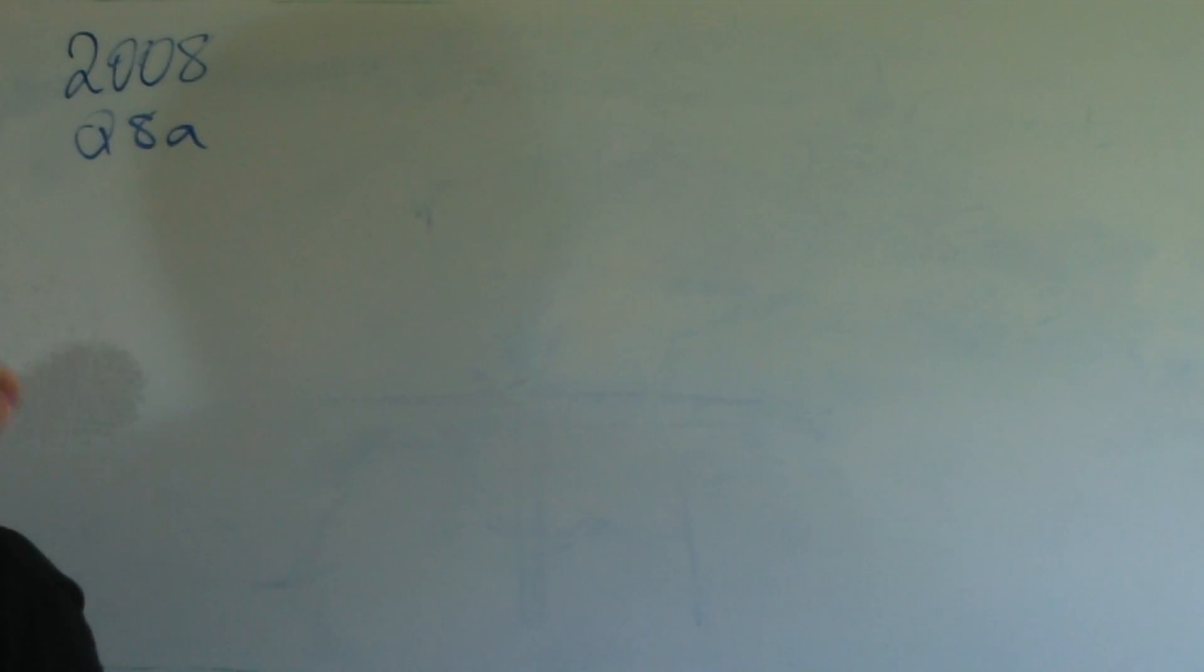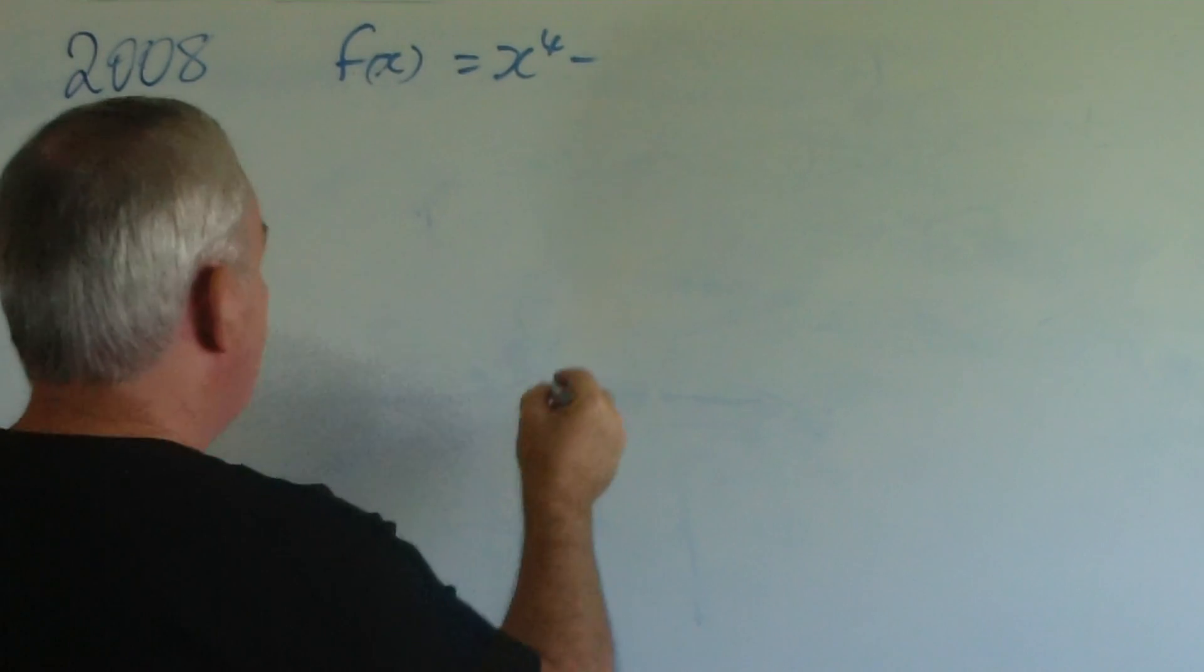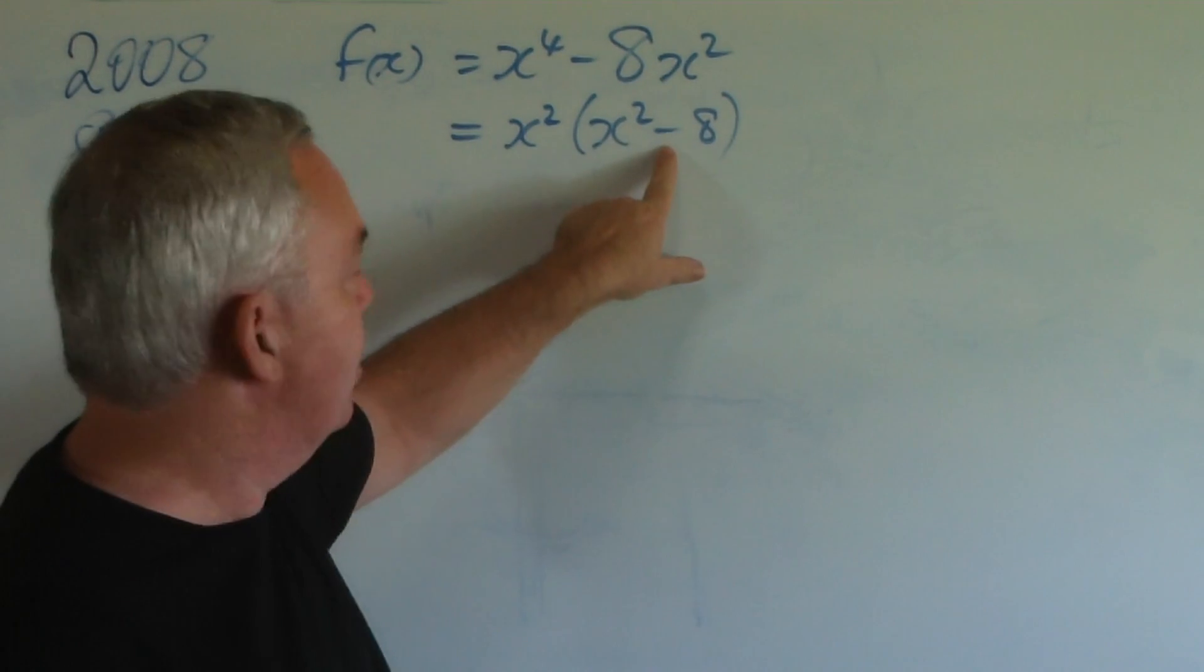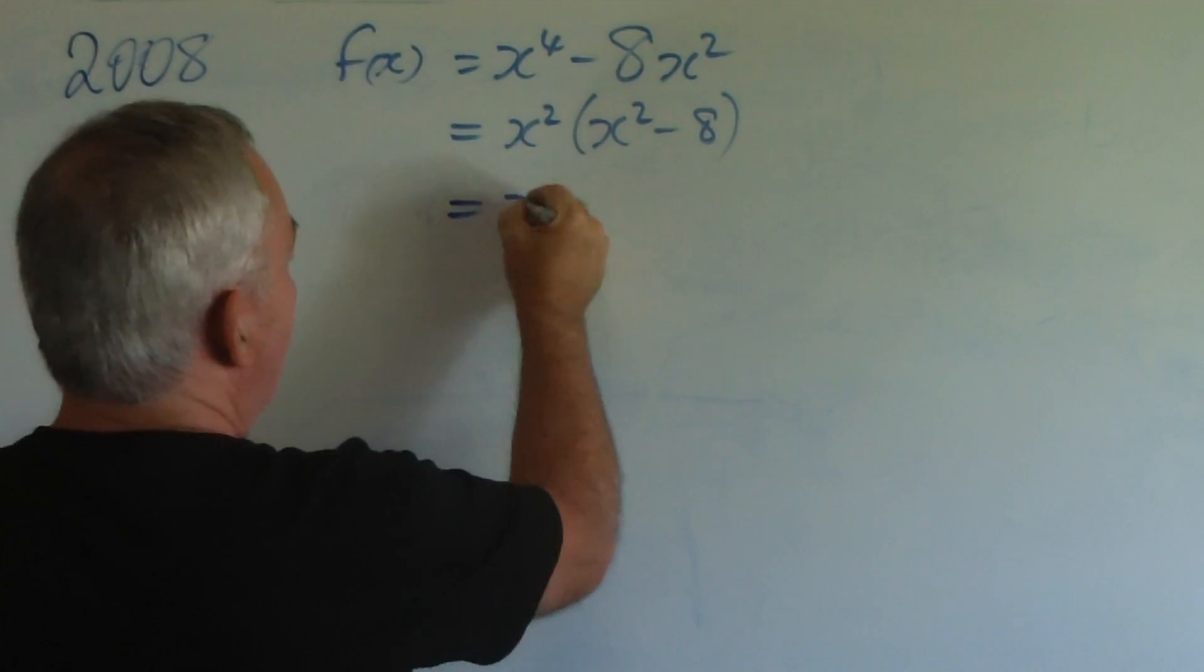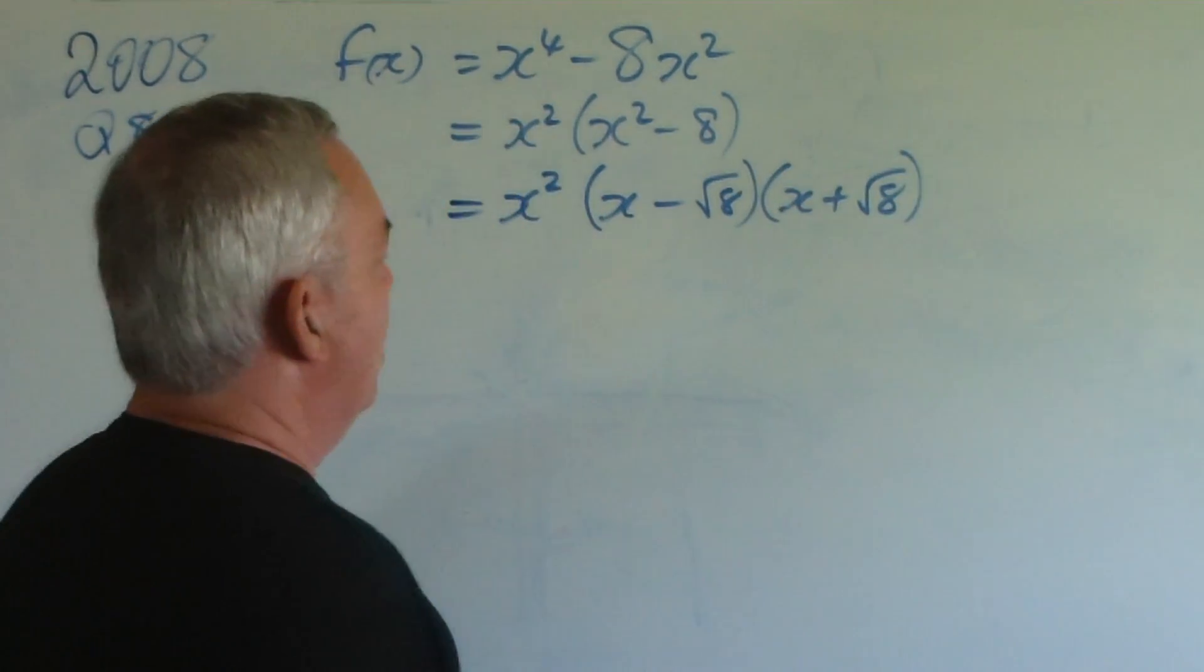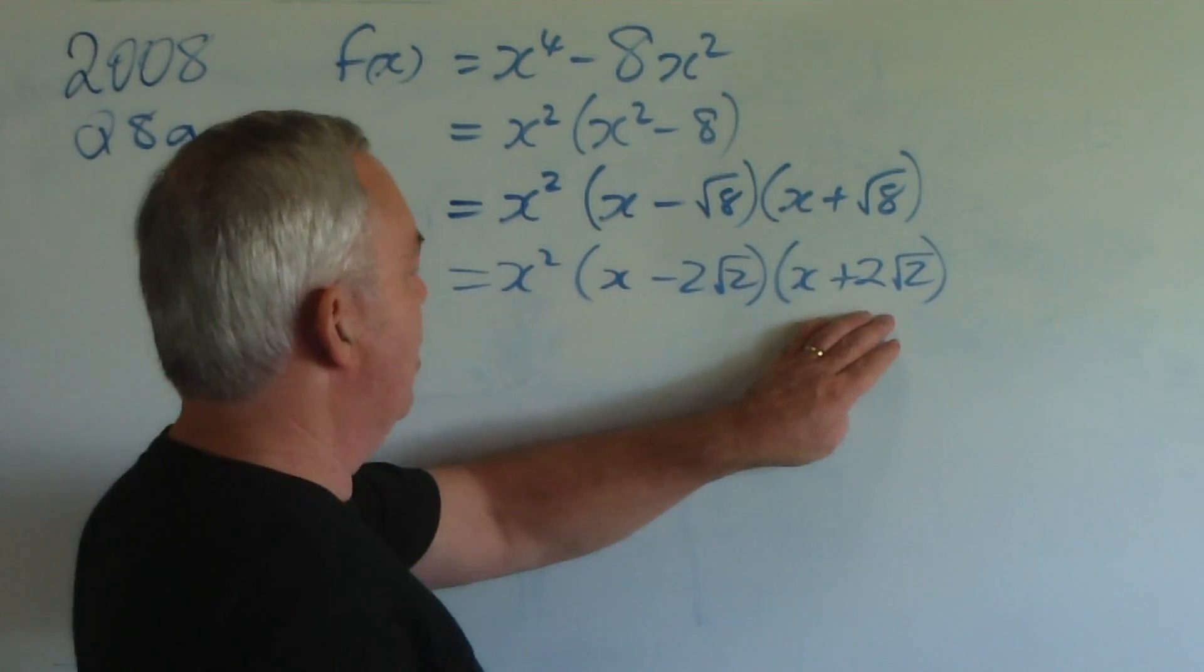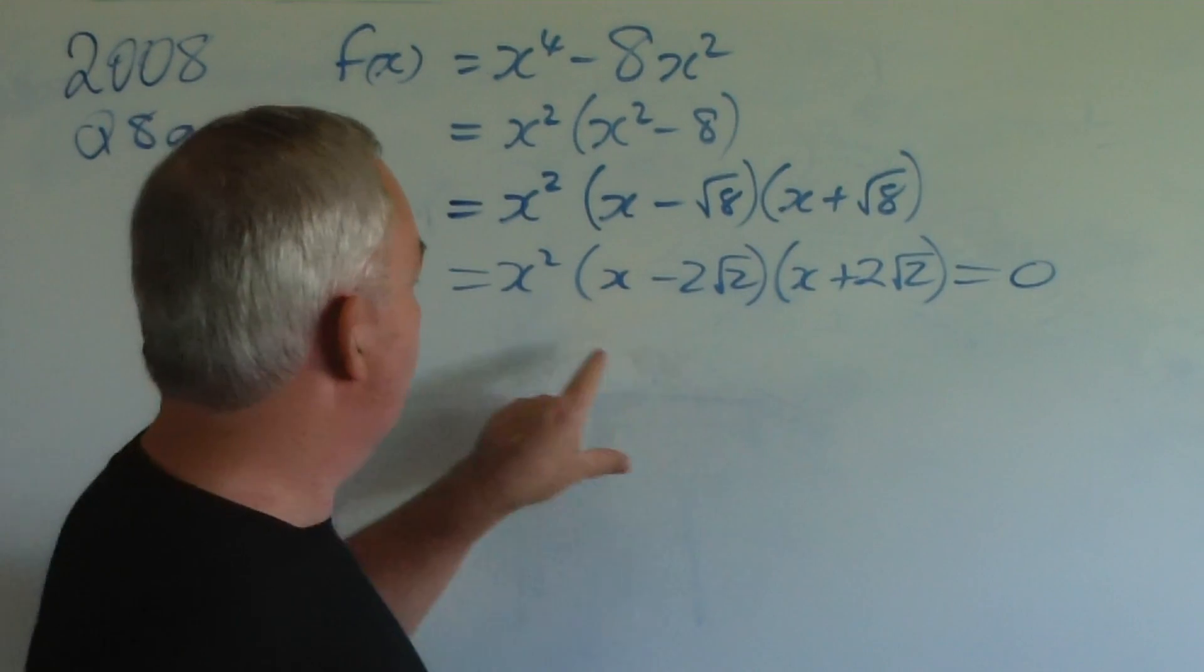Question 8a. The function this year was another quartic — x⁴ - 8x². You can see there's a common factor of x². And, I hope you can see that, because we have a subtraction, a minus sign here, that we do have a difference between squares. It's a little bit ugly. We're going to have a third or thirds. x minus root eight, x plus root eight. If you'd like, we can simplify that a little bit. We set it equal to zero for the roots.